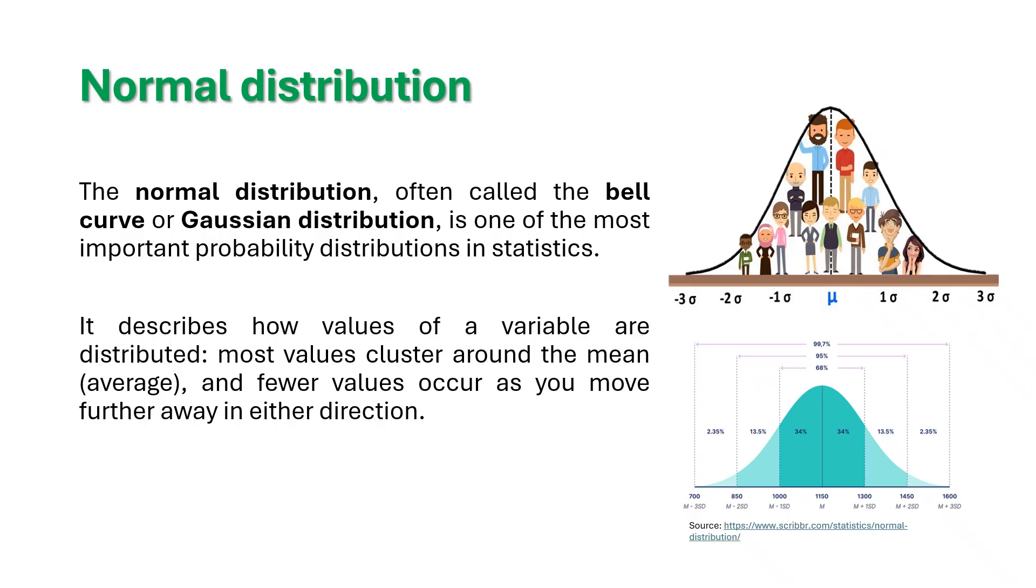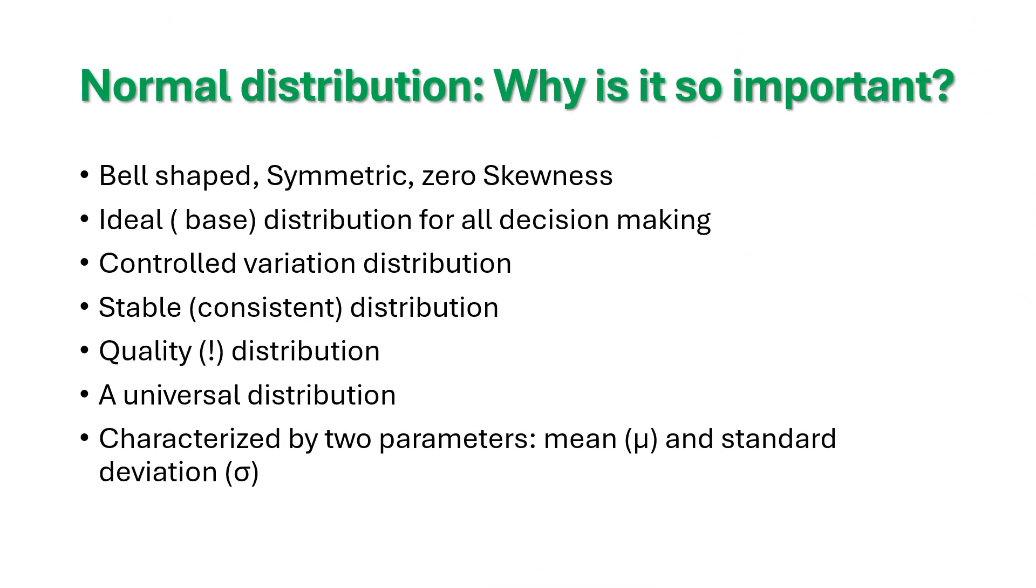It describes how values of a variable are distributed. Most values cluster around the mean or average and fewer values cluster or occur as you move further away from either direction. That's the reason why we get a hump kind of design. That is what is called normal. It's completely balanced or bell shaped.